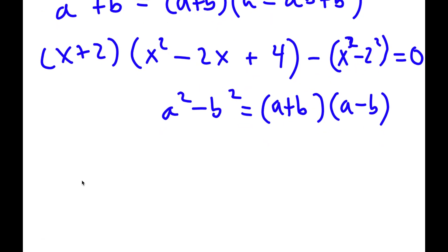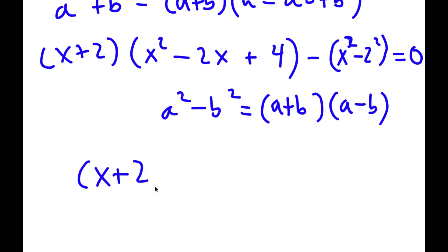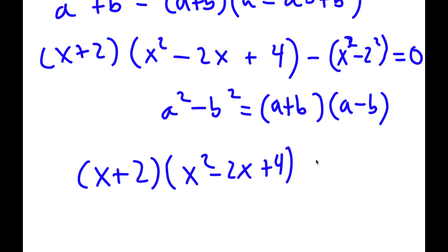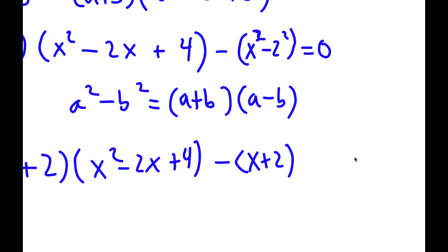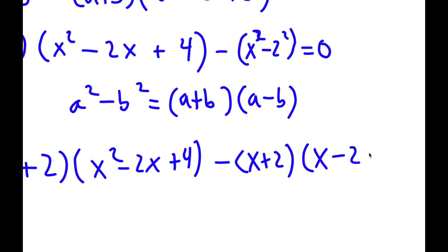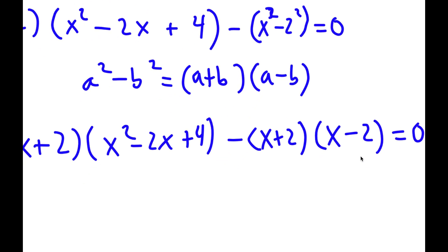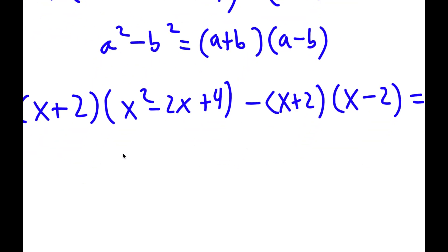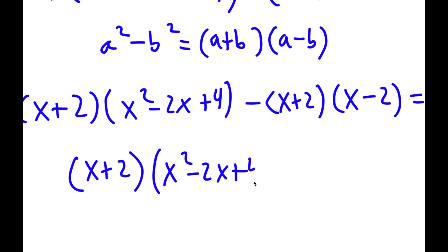So x squared minus 2 squared — let me write all of this. This is equal to x plus 2 times x minus 2. From here, if I factor out x plus 2, I get x plus 2 times x squared minus 2x plus 4 minus x plus 2, which is equal to 0.